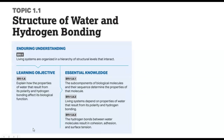Topic 1.1 is about the structure of water and hydrogen bonding. The big thing to know is the subunits of biological molecules — the monomers — and the order in which those monomers are put together. Also important are the properties of water: its polarity, hydrogen bonding, and why that is beneficial to living things, including cohesion, adhesion, surface tension, and polarity.